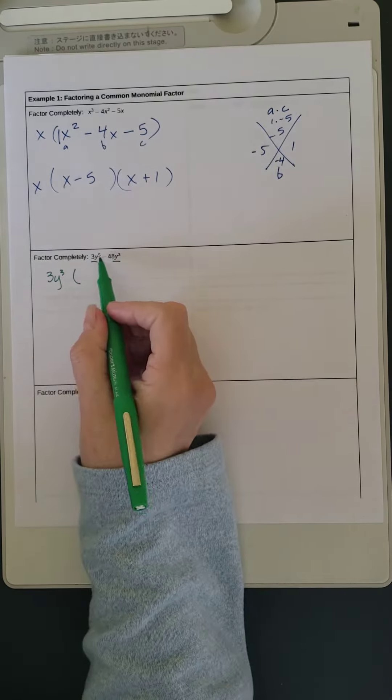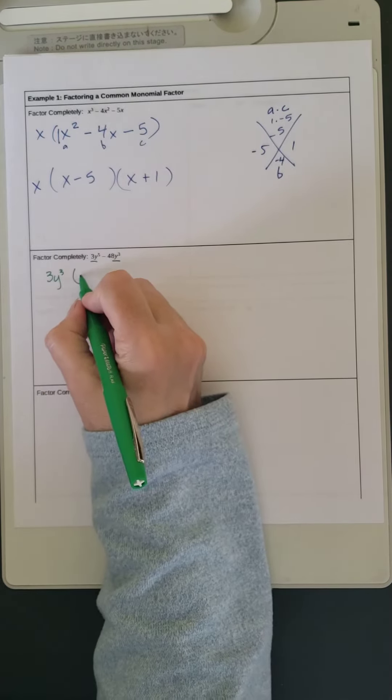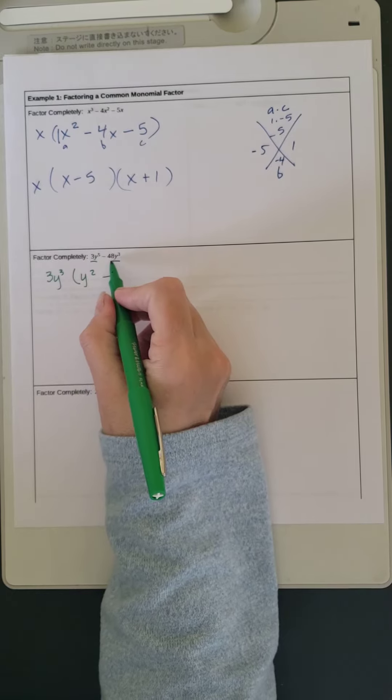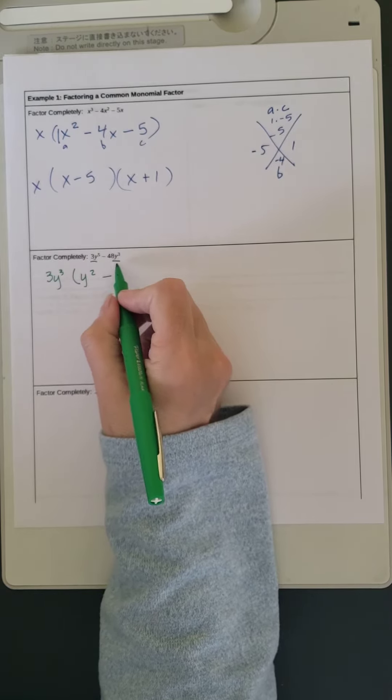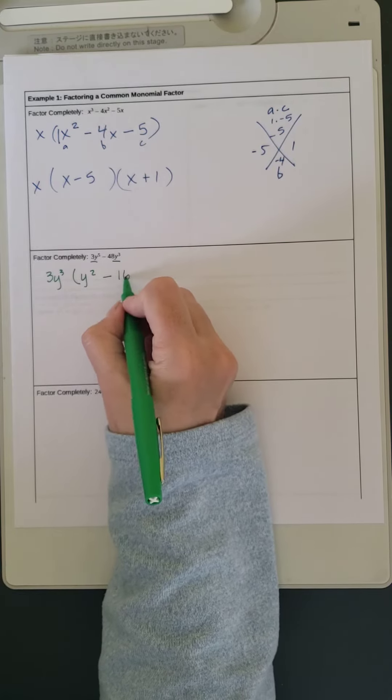So 3y to the 5th, factor out a 3y to the 3rd and we have y squared left, minus 48y cubed. So we factor a 3 and a y cubed out of this and we have 16 left.